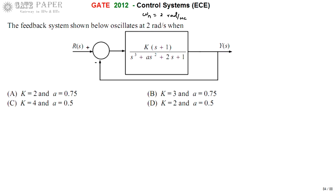This can be calculated from the Routh-Hurwitz criteria. Routh-Hurwitz criteria generally talks about the stability of the system. In the Routh array, the first column should have all positive elements for stability. If a row consists of all zeros, then the system is oscillating at a fixed frequency — this is exactly the case we are dealing with.